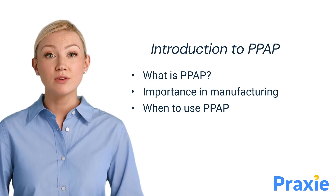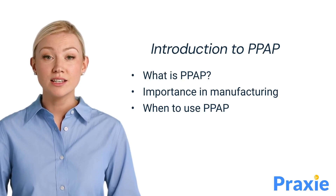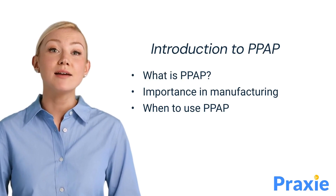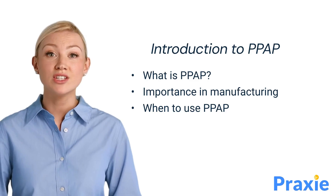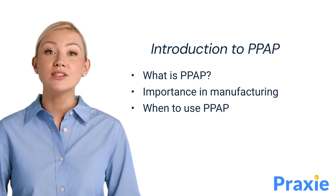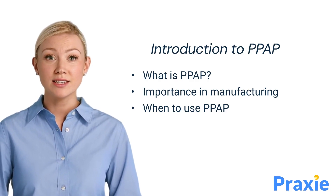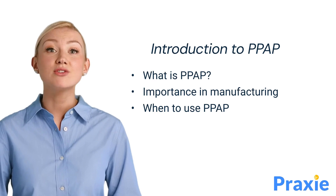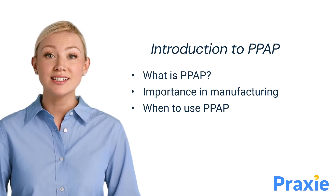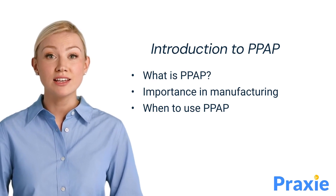PPAP stands for Production Part Approval Process. It's a structured procedure used in the automotive and manufacturing industries to ensure that the supplier can meet the customer's specifications consistently. It's crucial during the introduction of new parts, processes, or changes in the manufacturing environment.